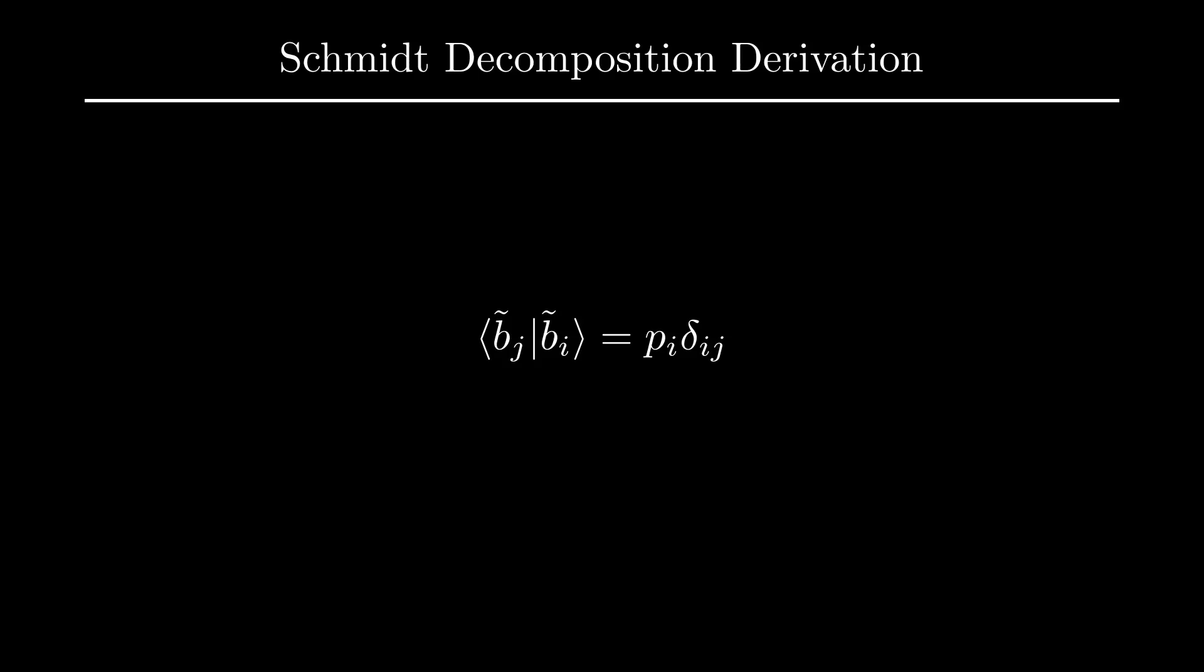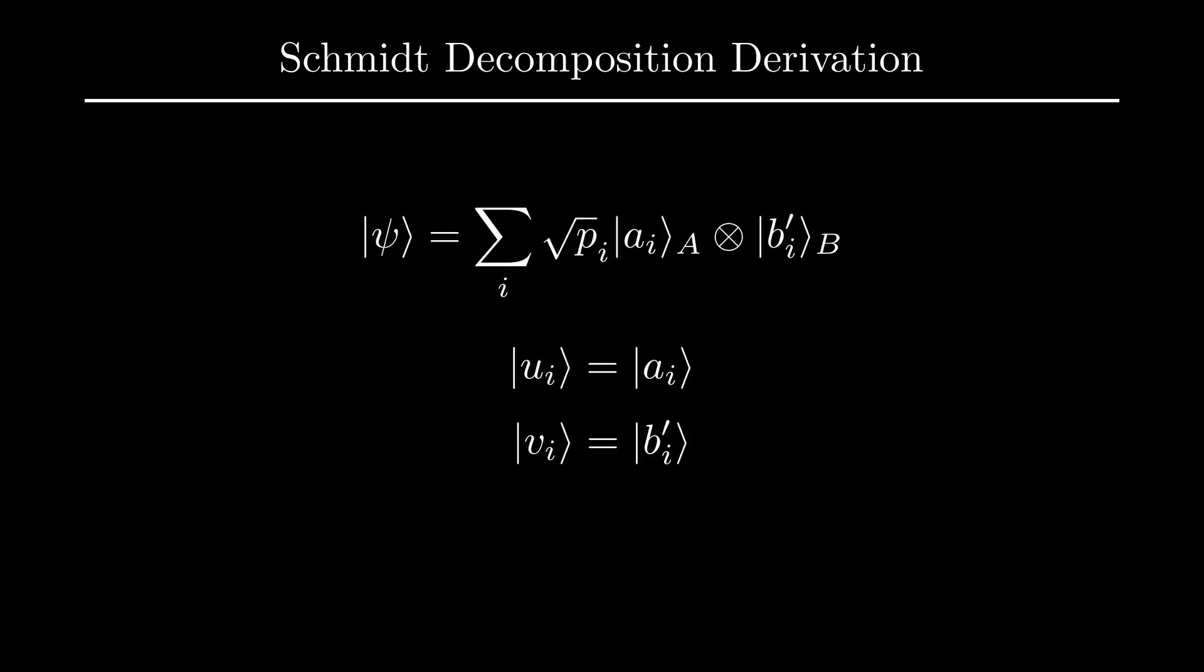Consequently, this means that the tilde BI basis is orthogonal after all. In order to remove the extra factor of PI in the inner product, in other words, make the basis orthonormal, we rescale each tilde BI by a factor of P to the power of minus one-half to obtain these B'I vectors. Using B'I, we then have the following decomposition for psi, where the AI vectors are orthonormal and the B'I vectors are also orthonormal.